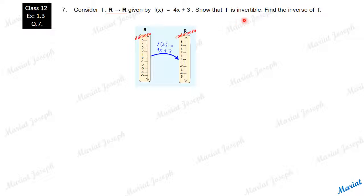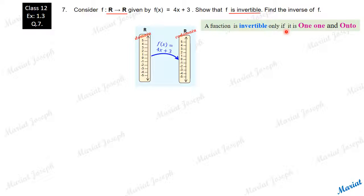To show it is invertible, first of all we have to show that the function is one-one and onto. A function is invertible only if it is one-one and onto.